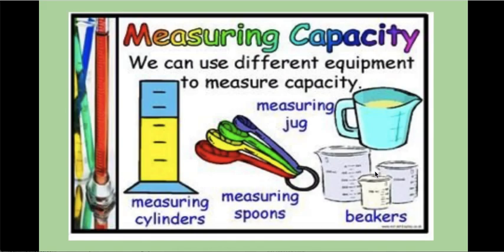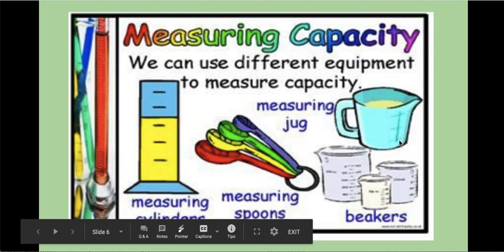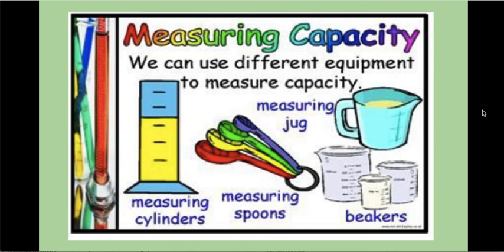Slide number two: measuring capacity. We use different equipment to measure capacity. Here are some of the tools: a measuring cylinder, measuring spoons, measuring jugs, and beakers. What you'll notice is that they all have these lines — these gradients — that show us they are measuring accurately. They are broken up into equal pieces of mils or litres so that we can all measure a liquid and get the same result. Pause the video and copy that poster into your book.